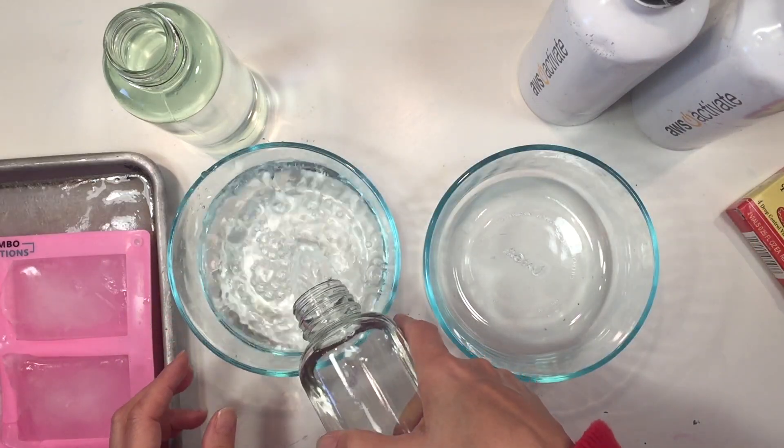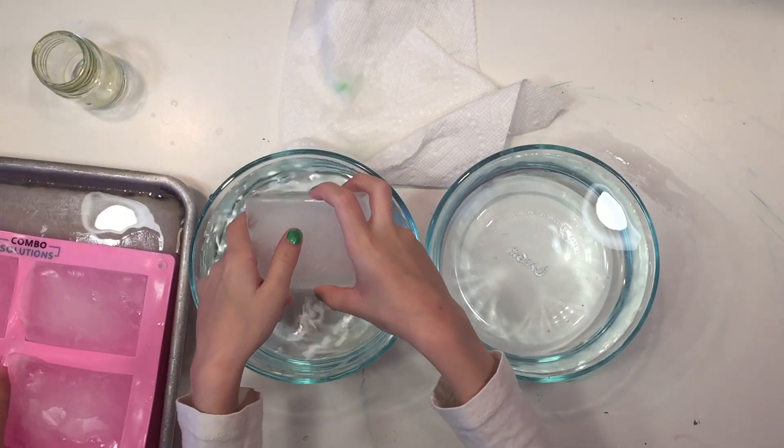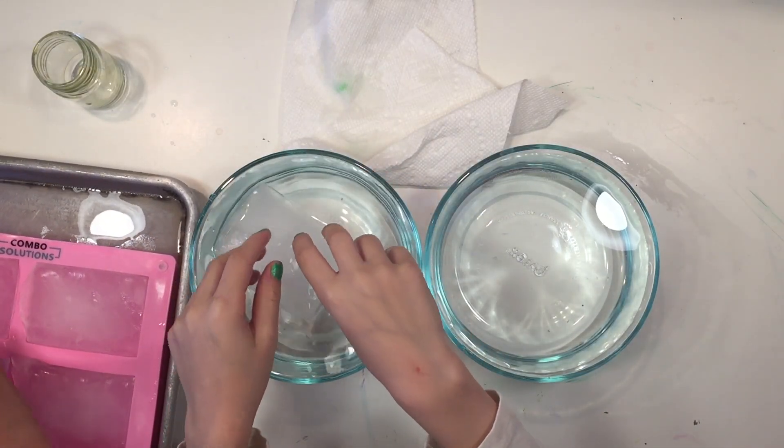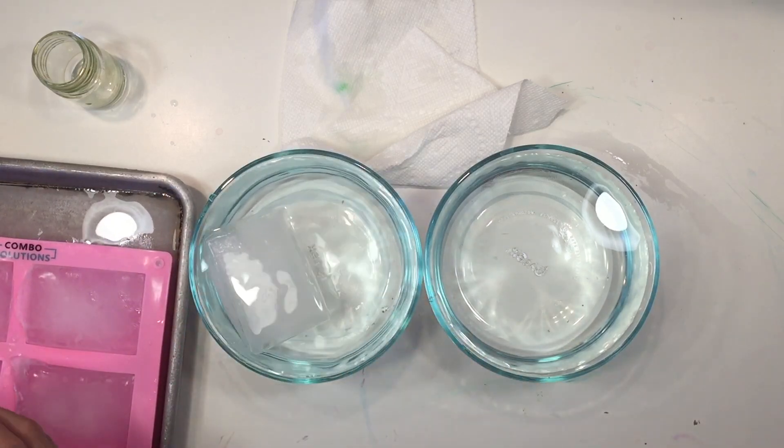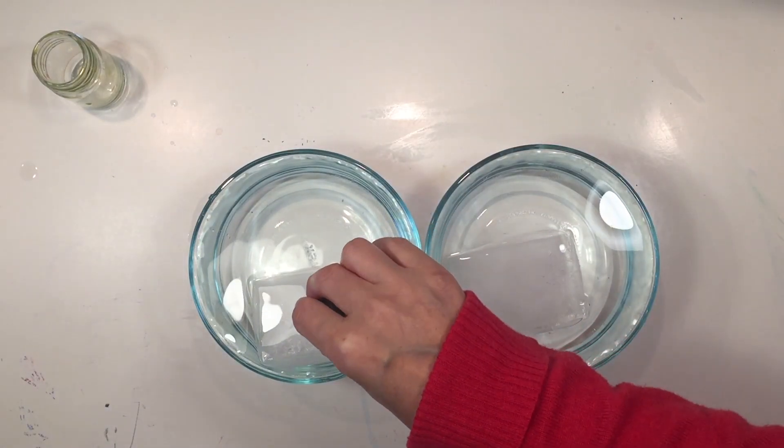I'm going to go ahead and put the fresh water on the left side. Go ahead and put an ice cube in each one. That's the salt water. That's the fresh water. What we're gonna do is put three drops of food coloring on each.